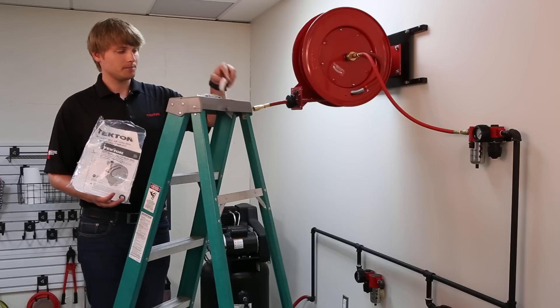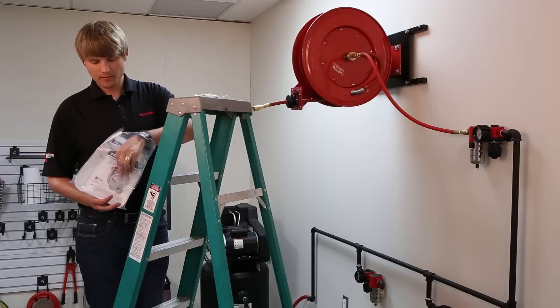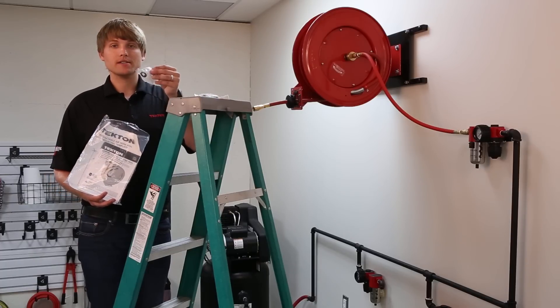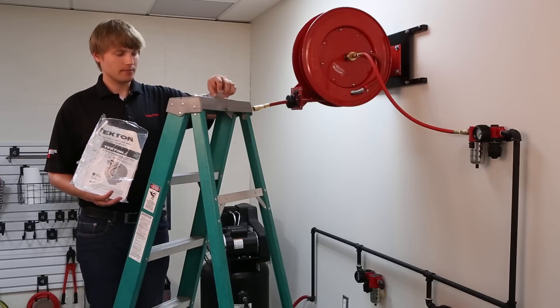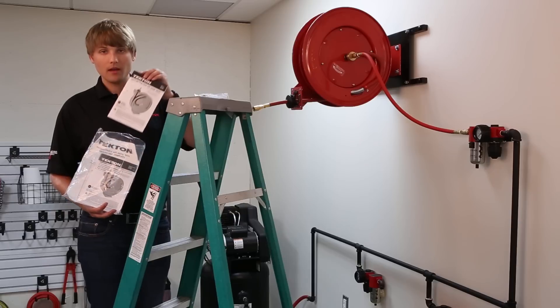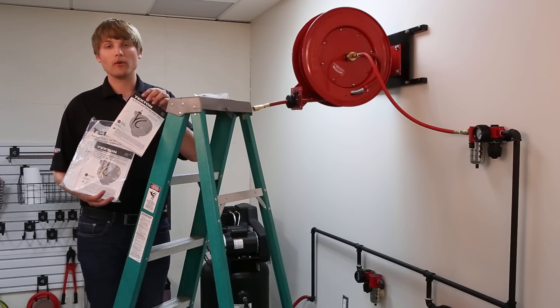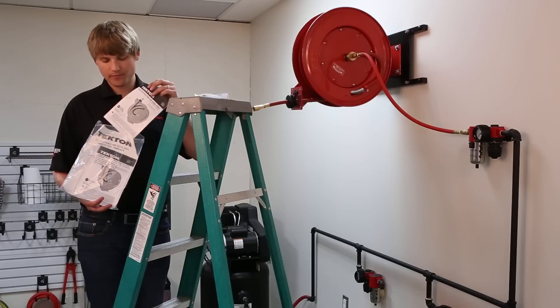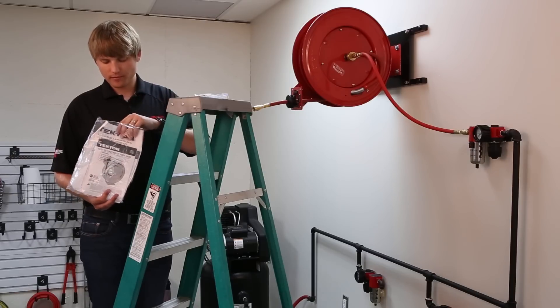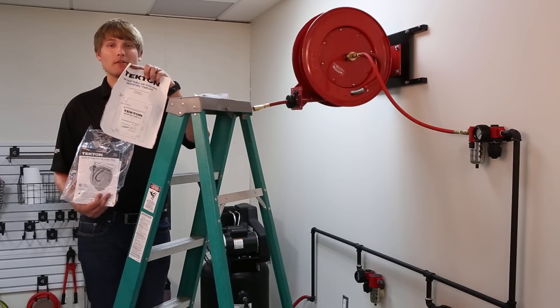The packet also includes thread sealing tape, two extra O-rings and an extra snap ring, a detailed operator's manual which you should read and understand before installing your air hose reel, and a mounting template.